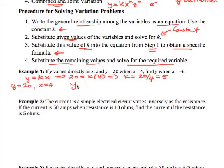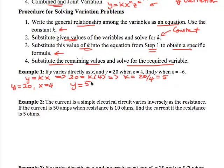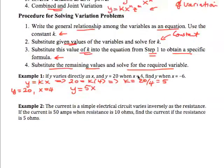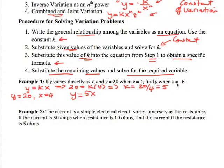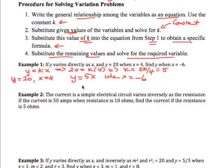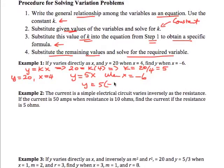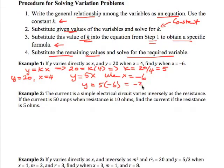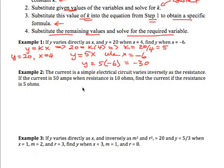So our actual formula would be y equals 5x. Now we want to find y when x is negative 6. So when x is negative 6 we'd have y is equal to 5 times negative 6 which would be negative 30.